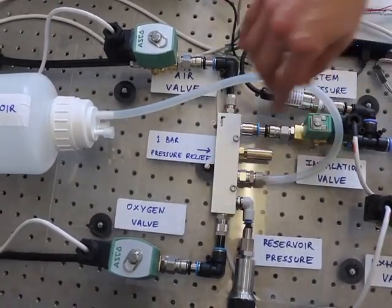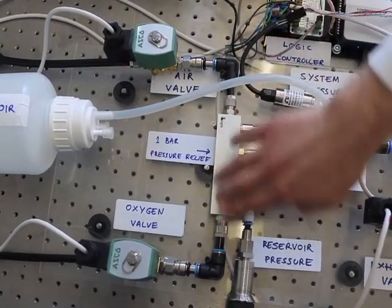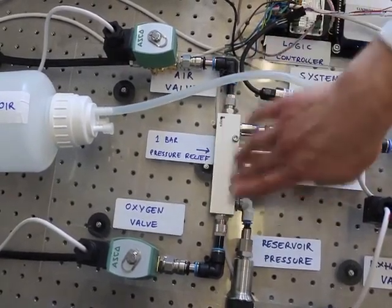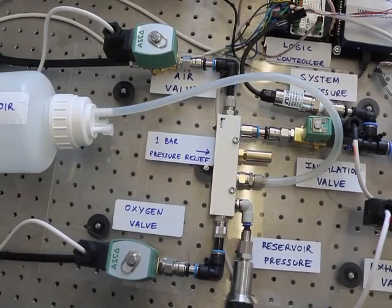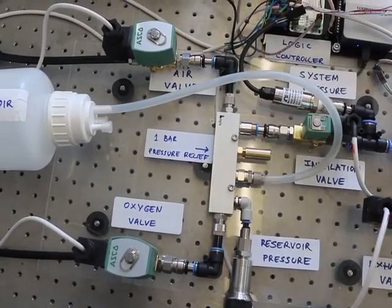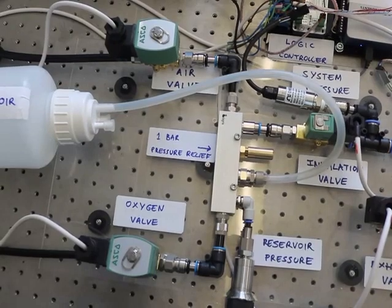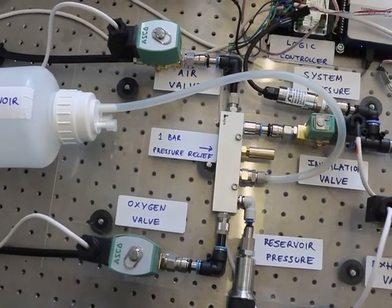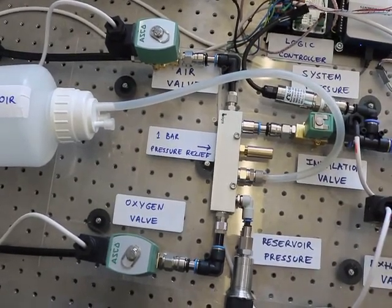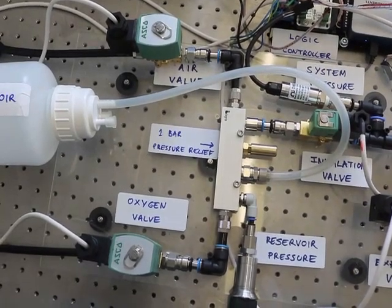So these valves are connected to the reservoir by this manifold here. This just has basically open pathways, so they're all connected to the same bit of gas. Here we have a pressure sensor. So we use that to monitor the pressure in the reservoir. In the reservoir, we need to get not only the right pressure, but also the right mix of gas. So the pressure sensor allows us to monitor that.